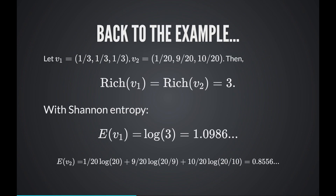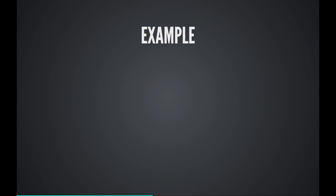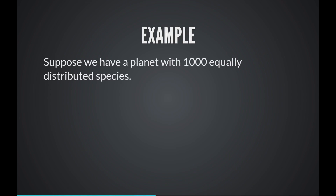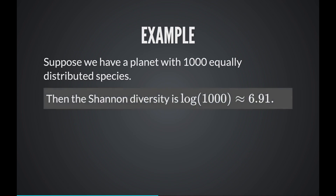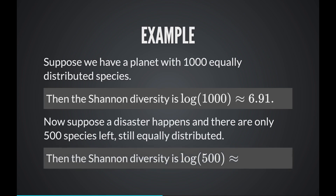In some sense, it's better to have more entropy rather than less. But what is the problem with Shannon entropy? Suppose we have a planet with 1,000 equally distributed species. The Shannon diversity is log 1,000, which is 6.91 — using the natural logarithm. Now suppose a disaster strikes and only 500 species remain, still equally distributed. The Shannon diversity is then log 500, which is 6.21. So although we have half the number of species, the Shannon diversity did not decrease by a very large number.